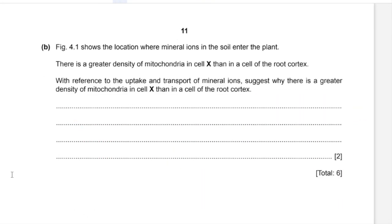Part B: Figure 4.1 shows the location where mineral ions in the soil enter the plant. There is a greater density of mitochondria in cell X than in the cells of root cortex. With reference to the uptake and transport of mineral ions, suggest why. Cell X needs to take up ions from the soil against their concentration gradient by active transport, which requires energy provided by mitochondria. Root cortex cells do not need to do this, so they have fewer mitochondria.